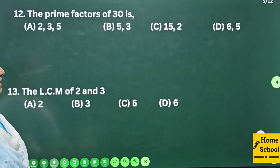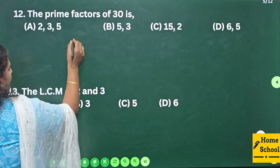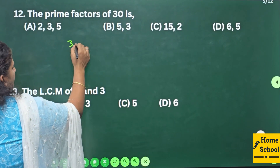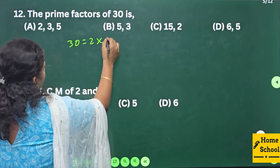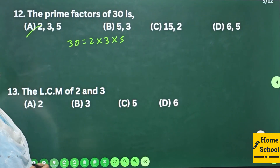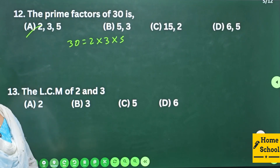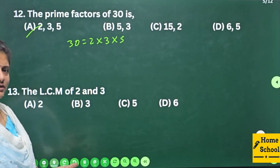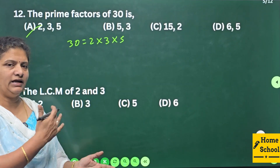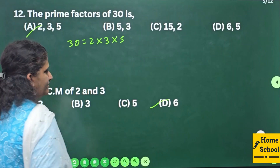Question 12: The prime factors of 30 are 2, 3, and 5. We can write: 2×3=6, 6×5=30. Now the LCM of 2 and 3 — 2 and 3 don't have any common factor, so directly multiply: 2×3 = 6 is your answer.